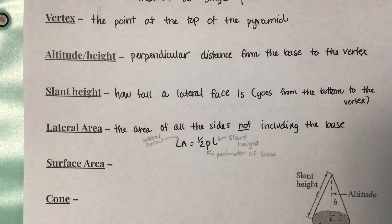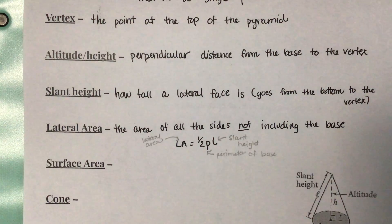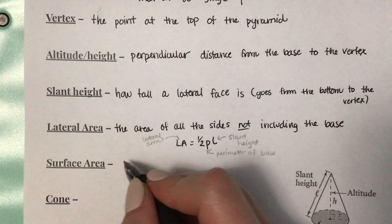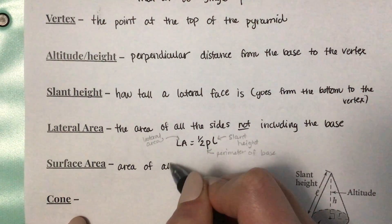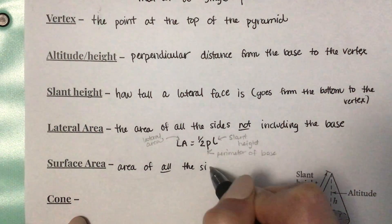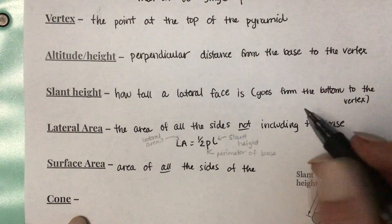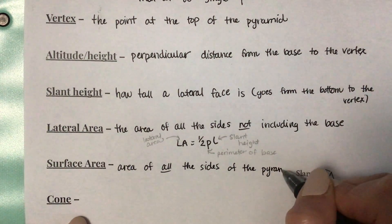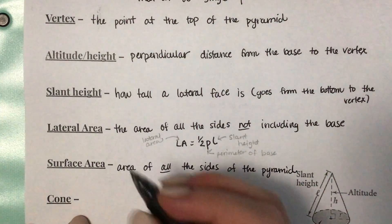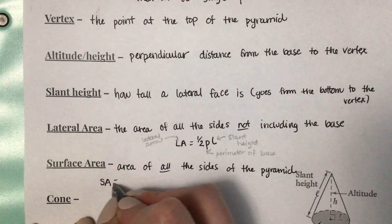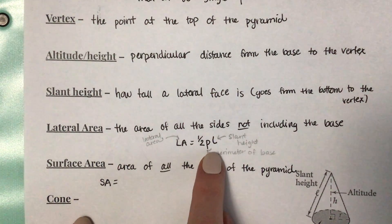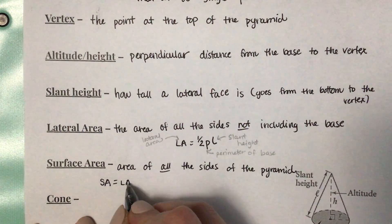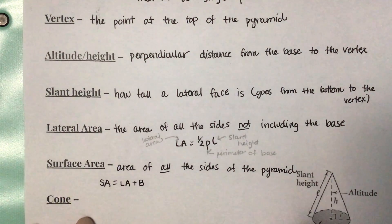Surface area is going to include all of the sides and also the bottom of the pyramid. Surface area is the area of all the sides of the pyramid. That formula is: surface area equals lateral area plus big B for base.